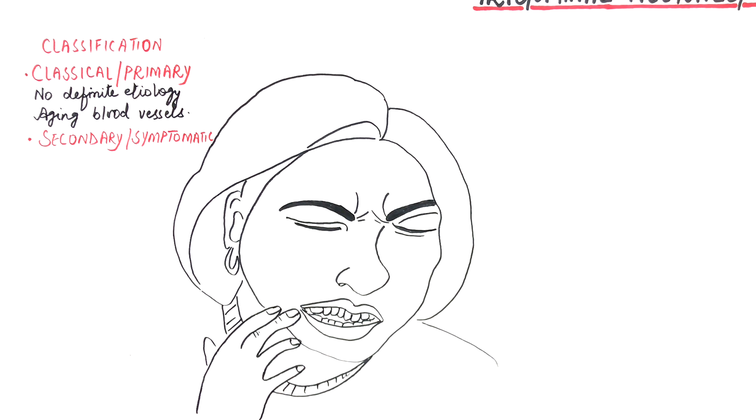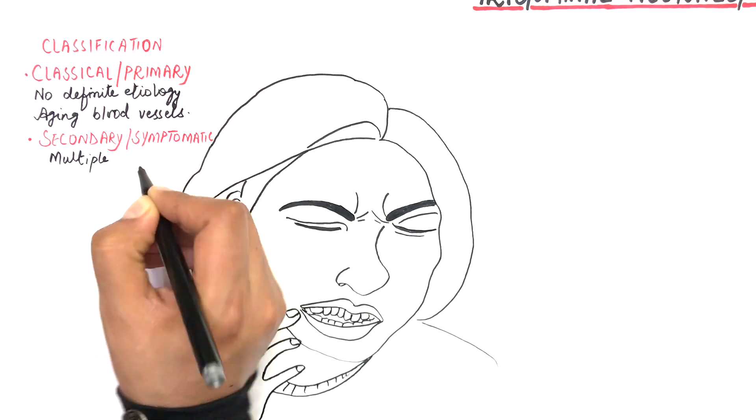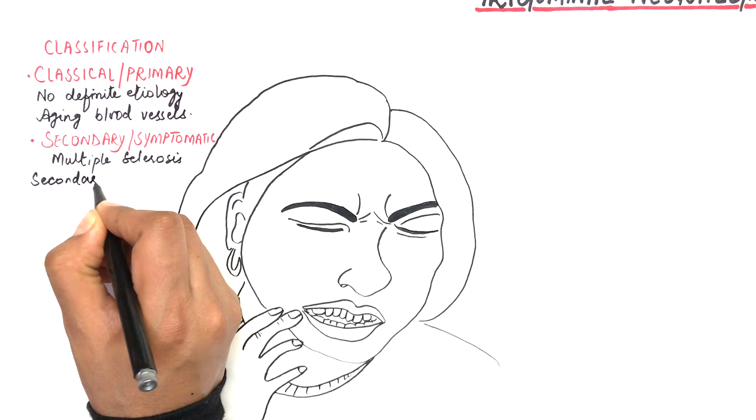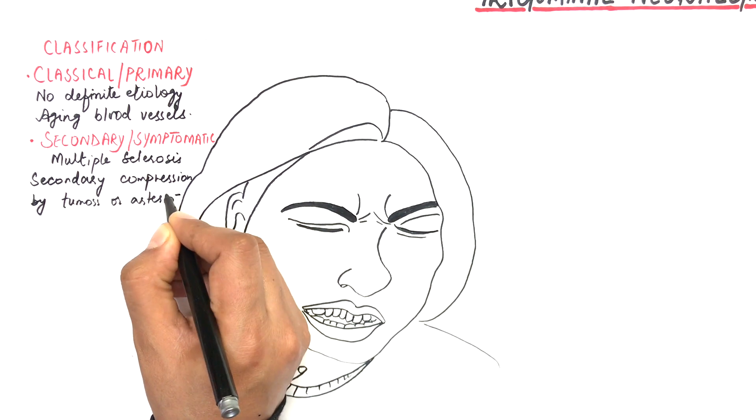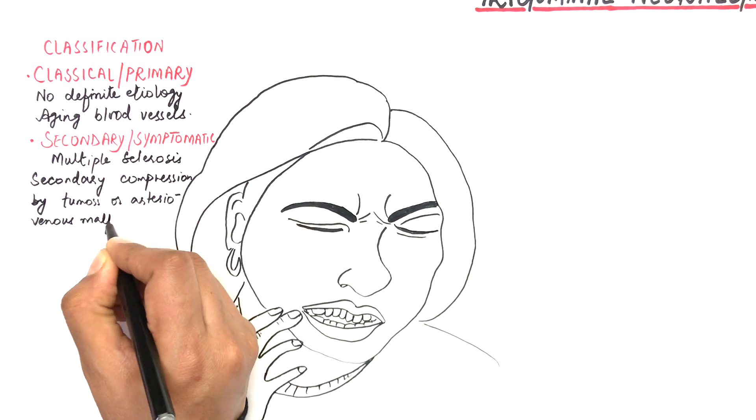The secondary or symptomatic trigeminal neuralgia can develop in patients with multiple sclerosis or may occur secondary to compression of the nerve by tumors or arteriovenous malformations.